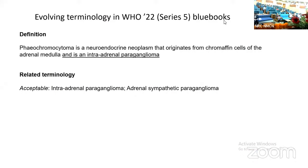So the terminology, or at least the concepts that accompany that terminology, have evolved in the 2022 series five Blue Books. The definition now is that a pheochromocytoma is a neuroendocrine neoplasm that originates from chromaffin cells of the adrenal medulla and is an intra-adrenal paraganglioma. The historical nomenclature annotation is gone — it is in fact a reasonable term to think of it as a paraganglioma. Related acceptable terminology includes intra-adrenal paraganglioma or adrenal sympathetic paraganglioma.